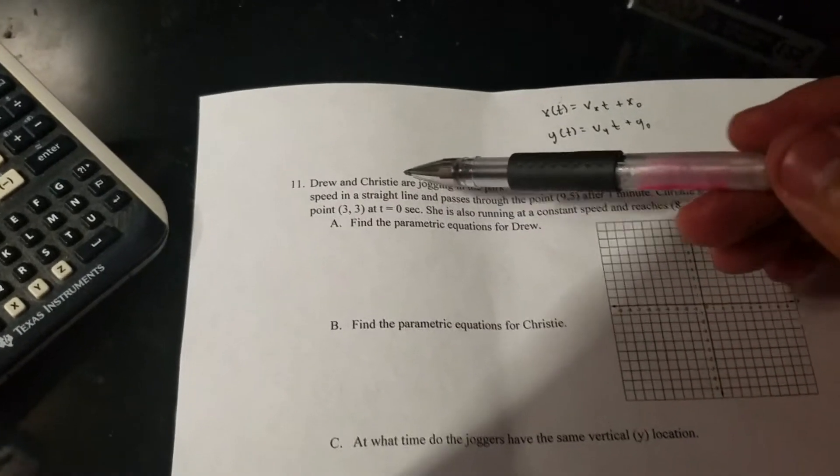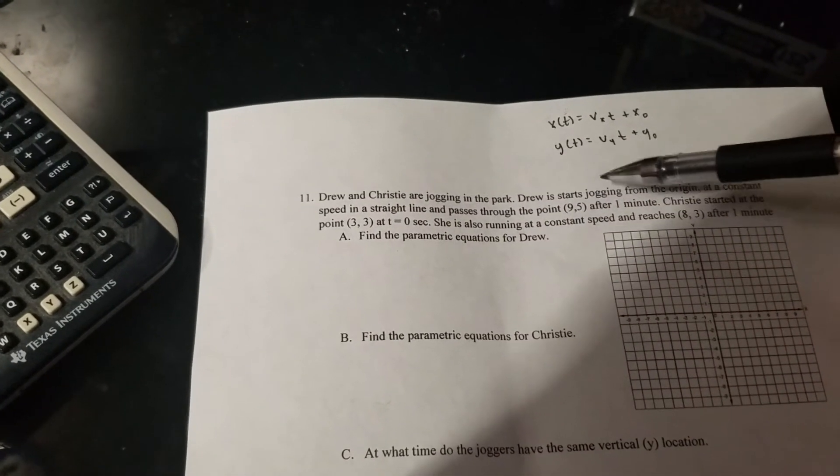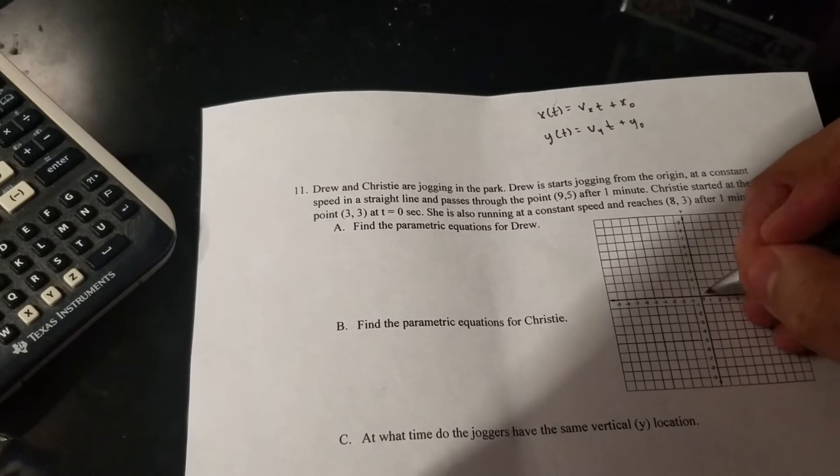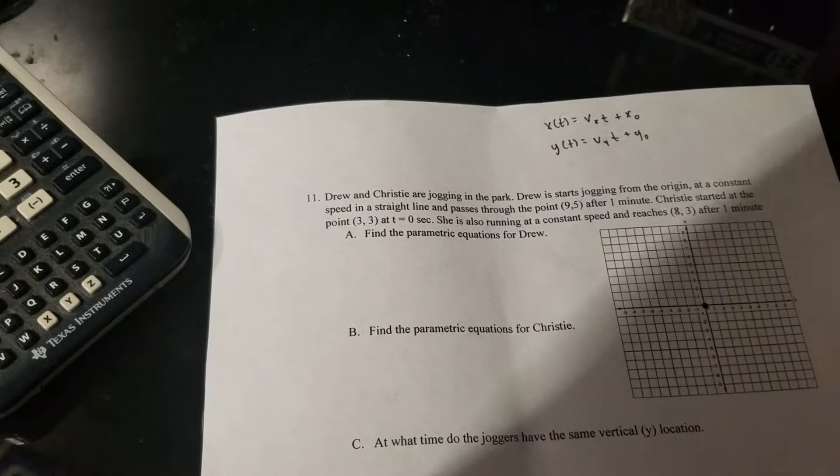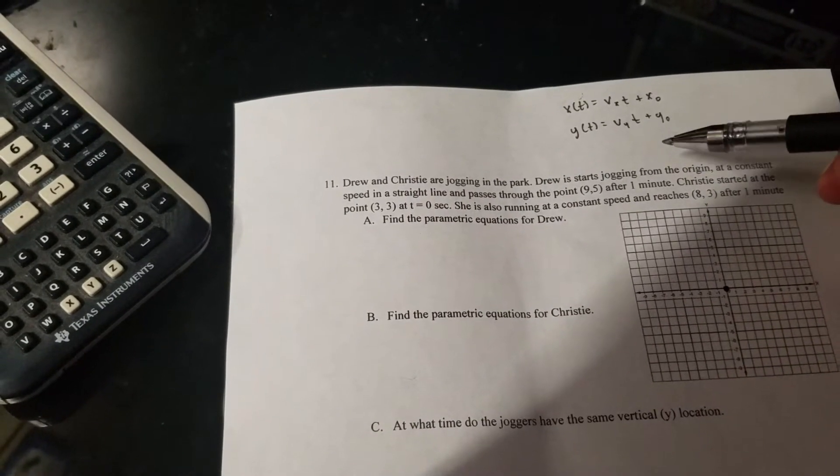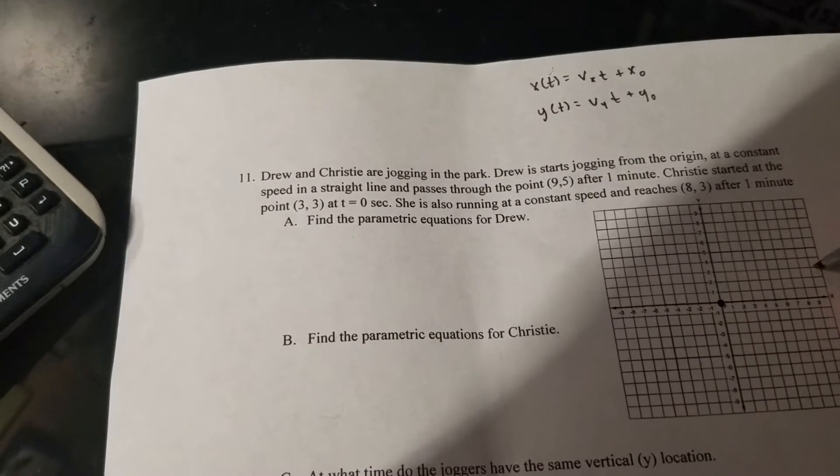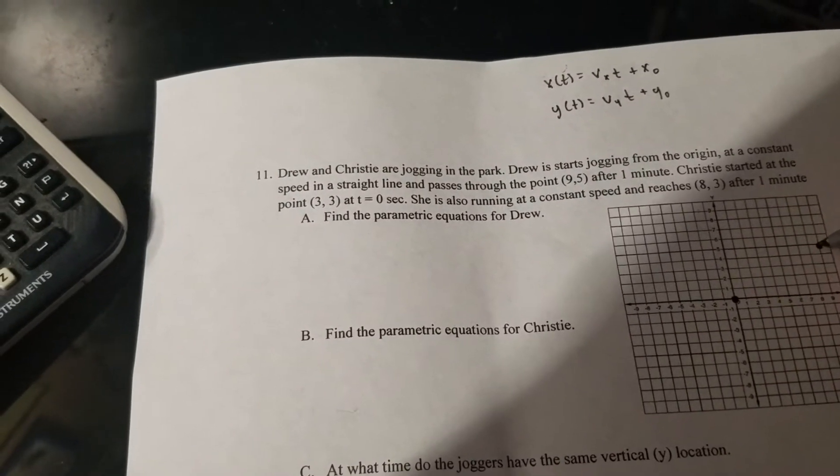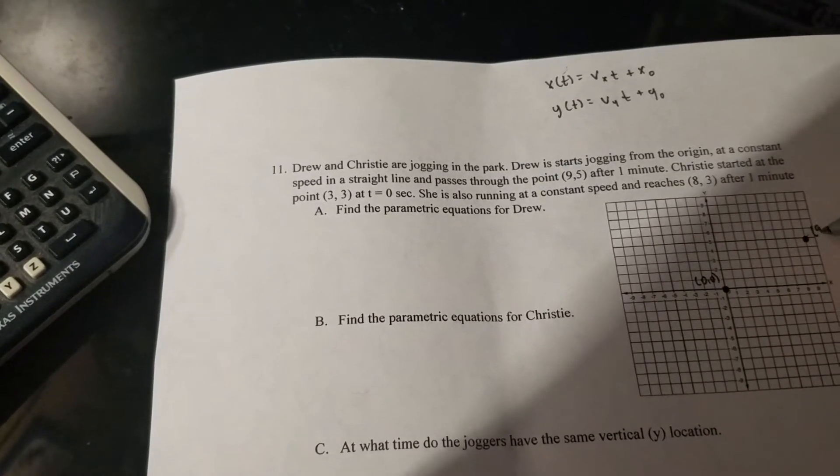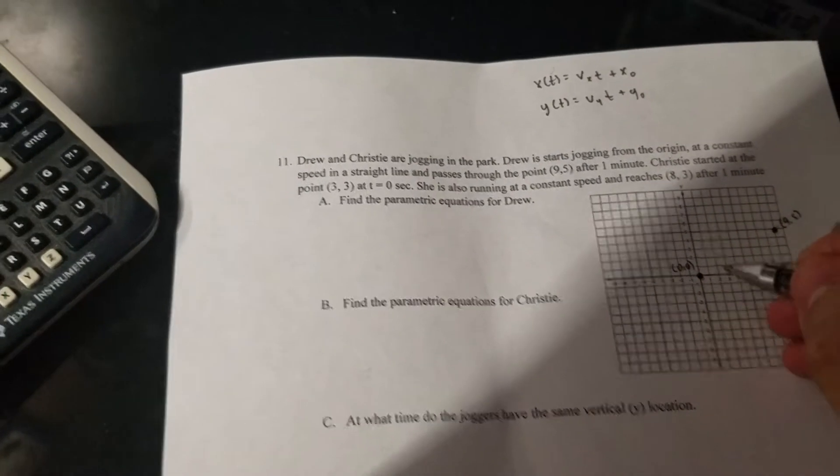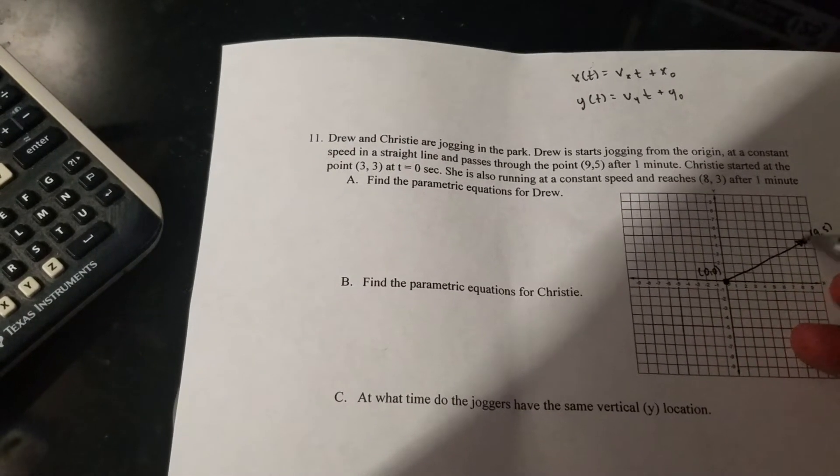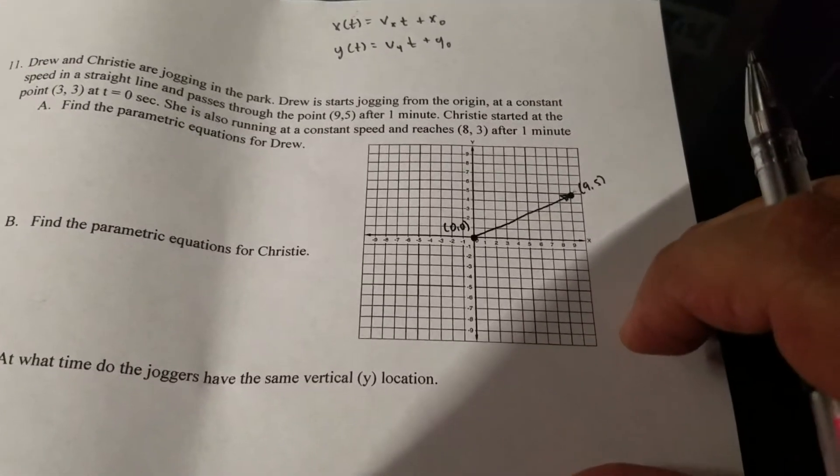Here they tell me that Drew and Christie are jogging in the park. He starts at the origin, so this is Drew first we're dealing with Drew. He runs at a constant speed in a straight line and passes through nine five so that puts me at one, right here. So he started over here at zero zero and he ended at nine five. So this is the path that I moved in.